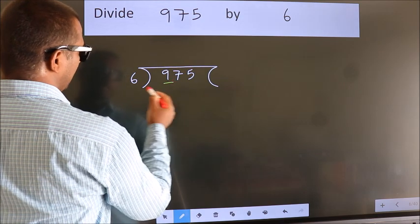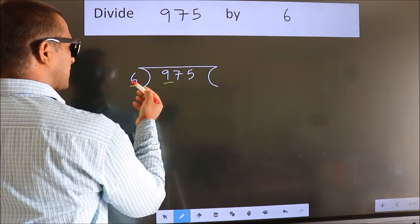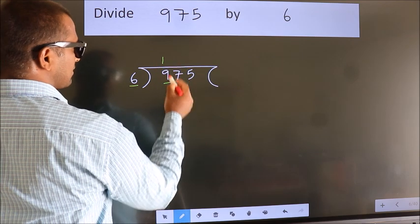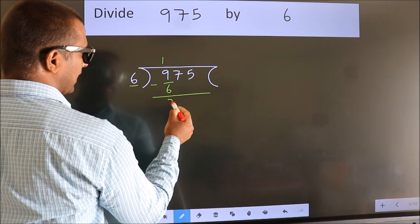Here we have 9. Here 6. A number close to 9 in 6 table is 6 once 6. Now we should subtract. We get 3.